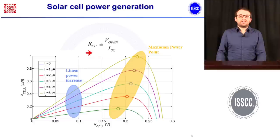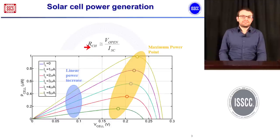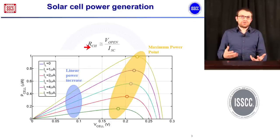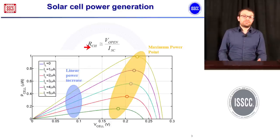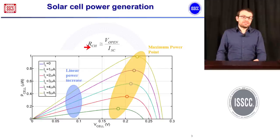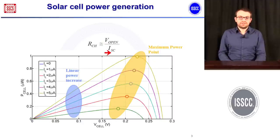We can define a characteristic resistance RCH as the resistance you should connect to the solar cell to extract maximum power out of it. This resistance can be easily approximated as the open-circuit voltage over the short-circuit current of the solar cell.